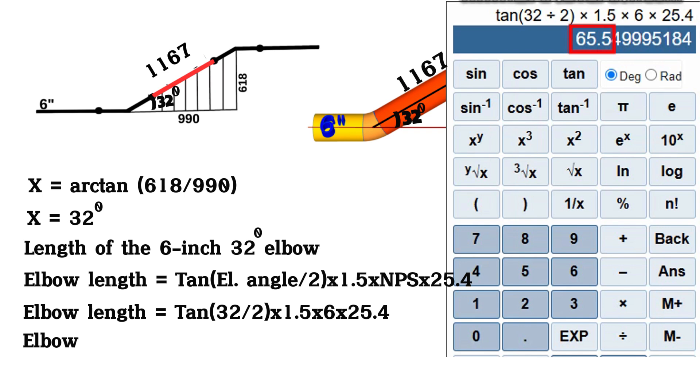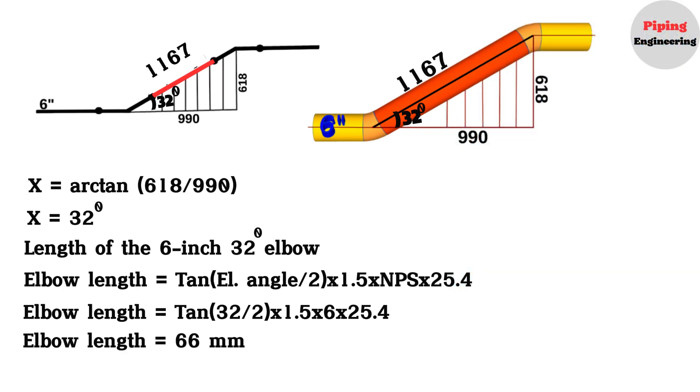So, we calculated and found that the length of the 6-inch, 32-degree elbow is 66 millimeters in this pipeline. Also, from our other videos, we learned that during fit-up, a small gap is required for welding. It should be approximately 3 to 4 millimeters.